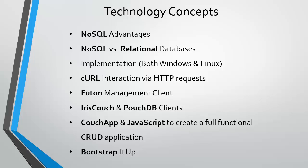We'll also cover IrisCouch and PouchDB clients. IrisCouch is basically a service that gives you a CouchDB database — it's just not on your local machine, it's on their server. PouchDB is a client we can use: we can code JavaScript with the PouchDB API and then sync it to either a local or remote CouchDB database. PouchDB is essentially a JavaScript framework to build JavaScript programs with CouchDB, and we'll be taking a look at that in depth.